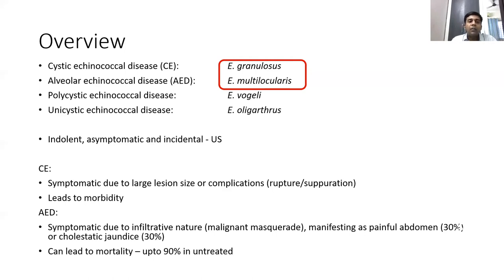Alveolar echinococcal disease is notorious because it is infiltrative in nature, appearing like a malignancy, with deposits in multiple locations resembling metastasis. It often manifests with pain and jaundice, and if untreated, the mortality can be as high as 90 percent.